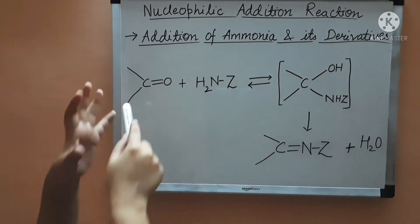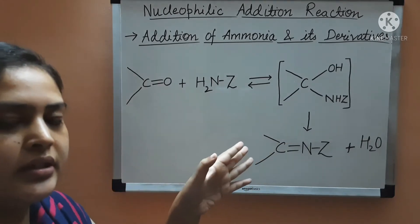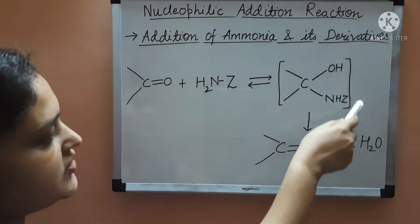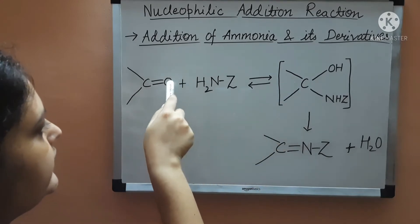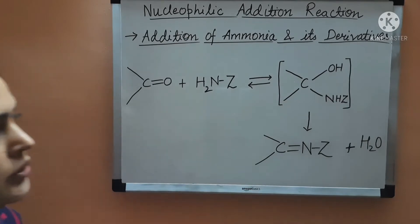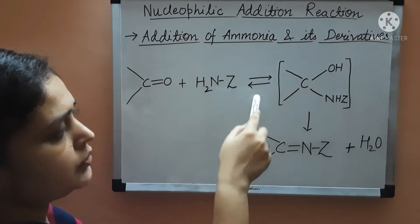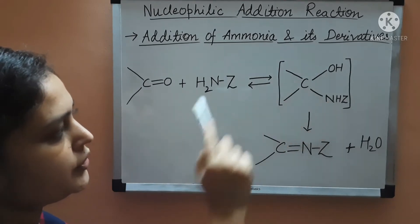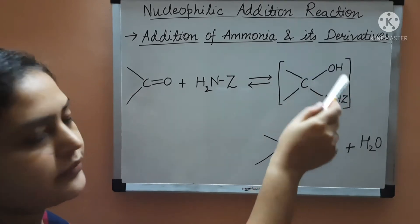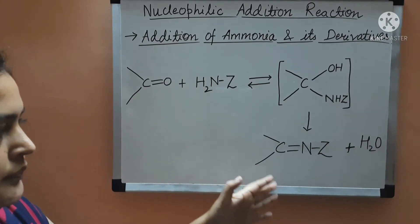When the derivative is added to the carbonyl compound, an intermediate will be formed. This reaction is reversible and the catalyst used here is acid. In this intermediate, NHZ is added to the carbonyl compound and the oxygen atom is attached to a hydrogen atom to form an alcohol-like intermediate. Quickly, the water molecule will be removed — this OH and hydrogen atom are removed as water.